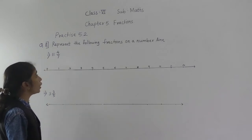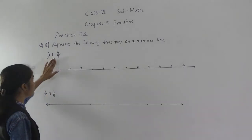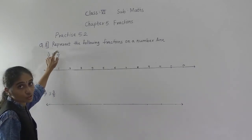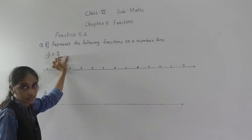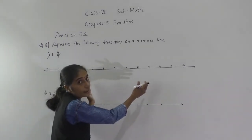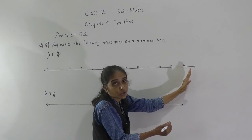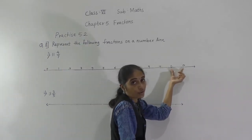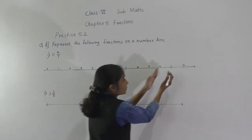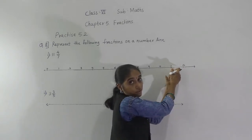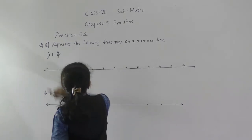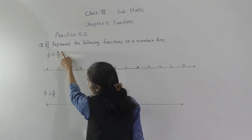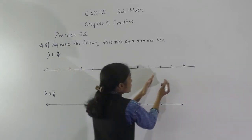Question number 8: Represent the following fractions on a number line. The fraction is 11 and 4 upon 7. Here 11 is the whole number and 4 upon 7 is the fractional part. So this number will come between 11 and 12 on the number line.